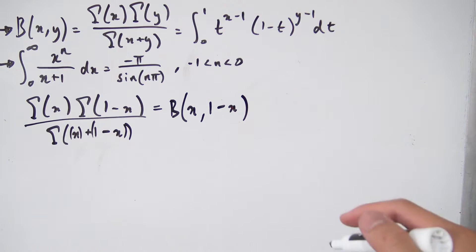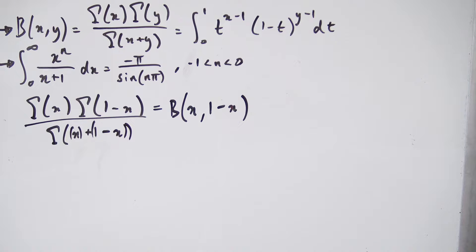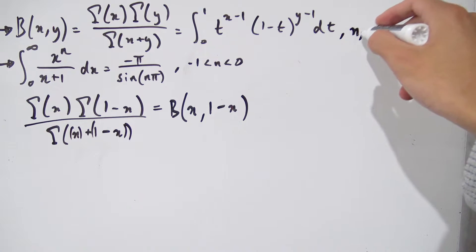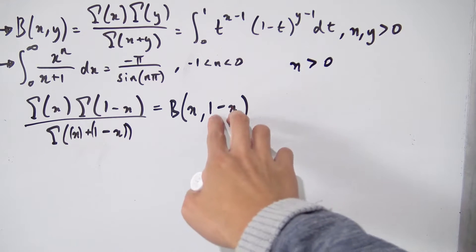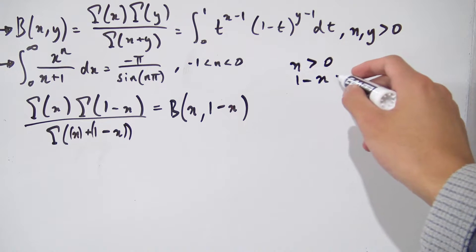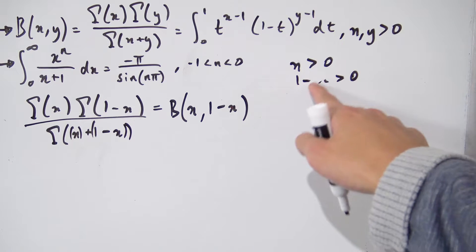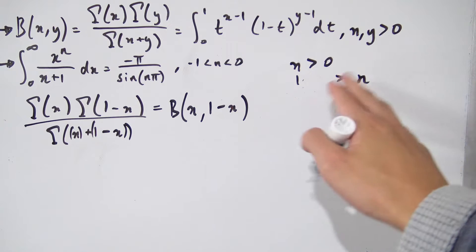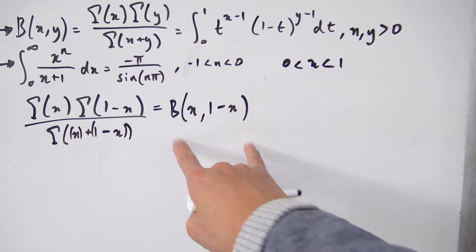A quick remark: the beta function only exists for x and y greater than 0 (or in the complex case, real parts greater than 0). We're dealing with the real case, so we need x greater than 0 and 1 minus x greater than 0. Combining these two restrictions gives us that x must be strictly between 0 and 1 — this is the restriction required for our beta function to exist.